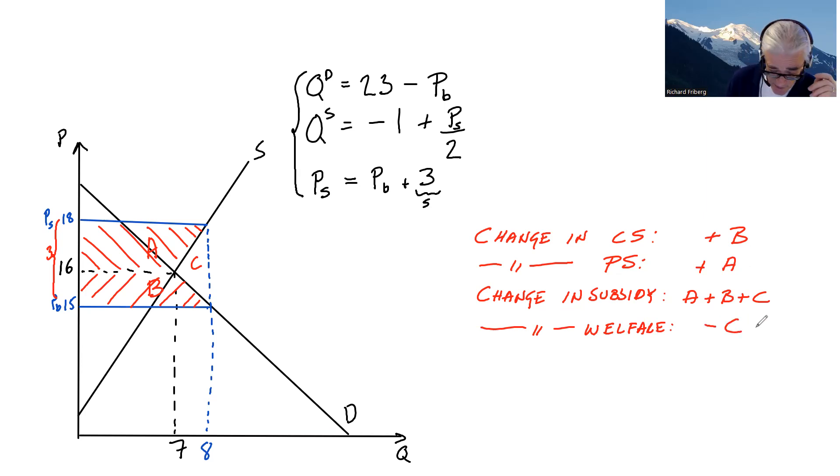There's some benefits A and B, but the costs A, B, and C are greater than the benefits. What's the C here? That's a deadweight loss of the subsidy. Deadweight loss.